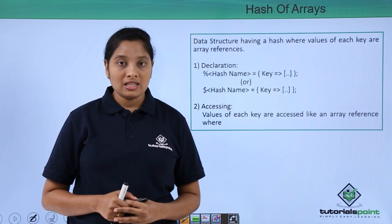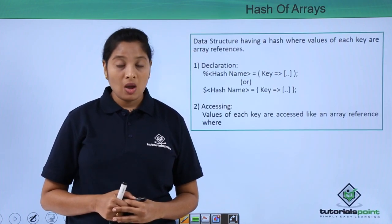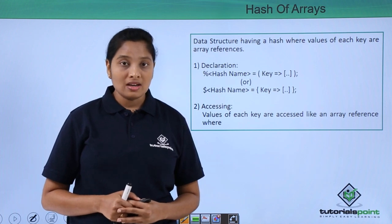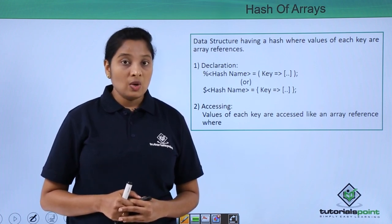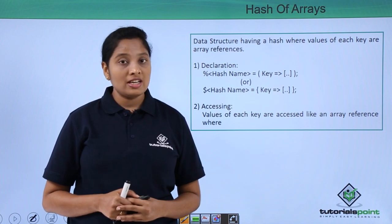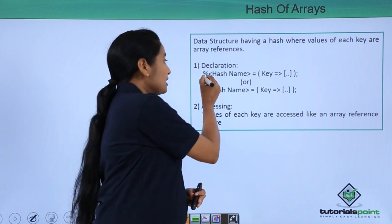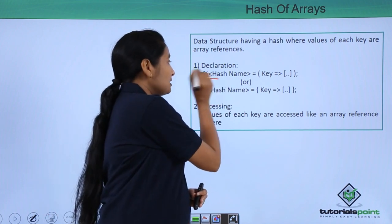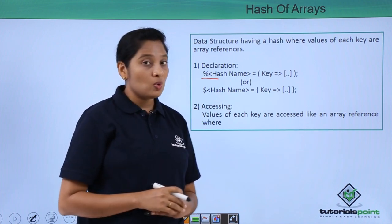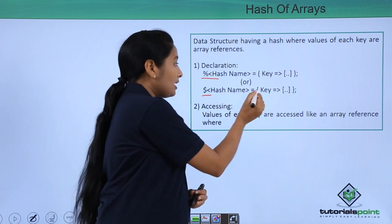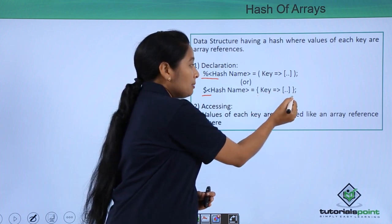Hash of arrays means a hash having key-value pairs where the value is an array reference. You can create hash of arrays in two ways: first by using a simple hash percent symbol, otherwise by using a reference. The key-value pairs have to be enclosed in curly braces.